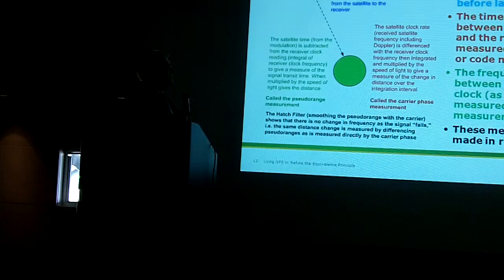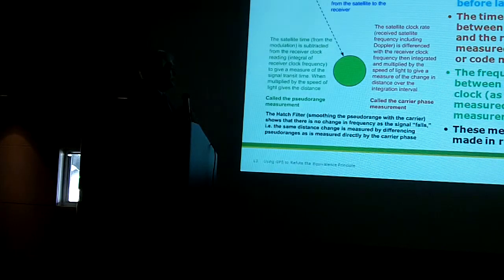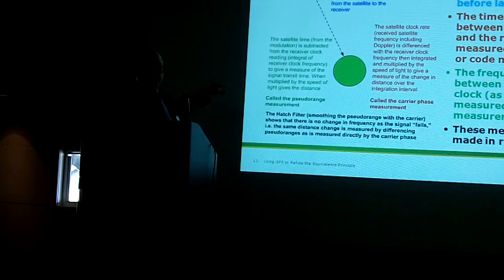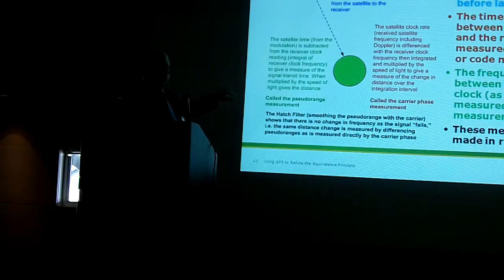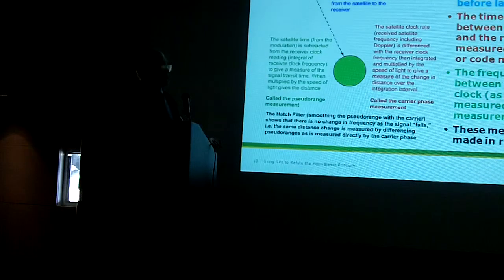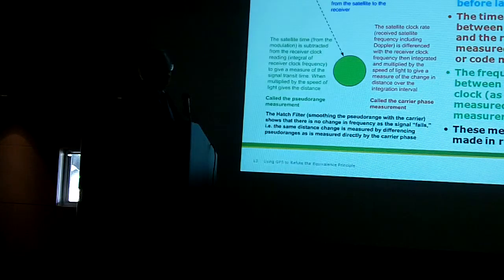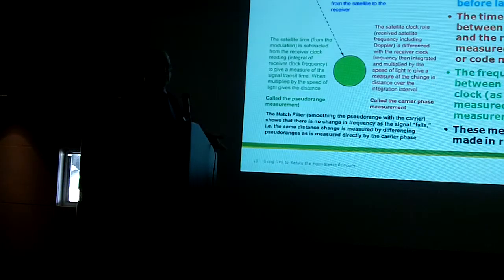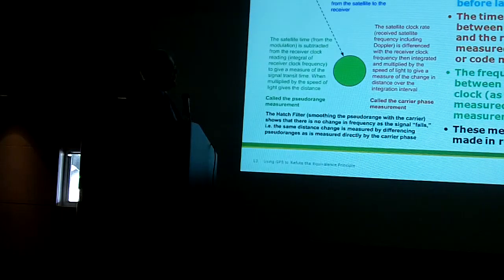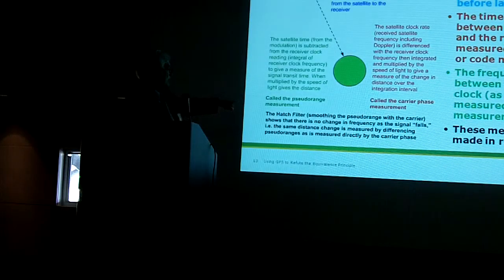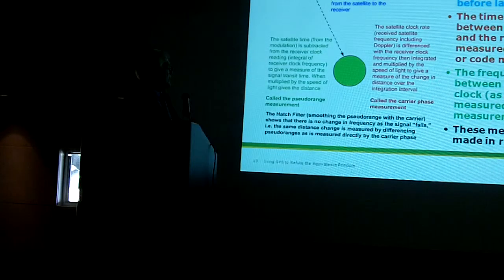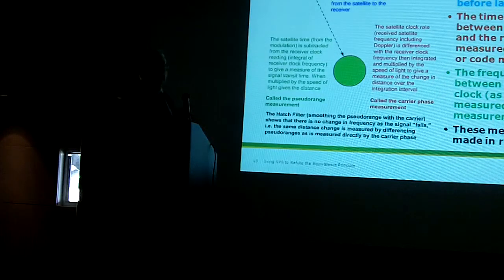The carrier phase—we undo that code modulation and we can recover the carrier phase. The code measurement has one important characteristic: it's an accurate measure of the range except for any clock errors, but also it's much noisier than the phase measurement. So we like to make the carrier phase measurement, which measures the change. By integrating it, I can measure the change in the range. Well, it turns out, because I happened to be the first one to do this, they call it the hatch filter, and it's on almost every GPS set. They smooth the pseudorange with the carrier.